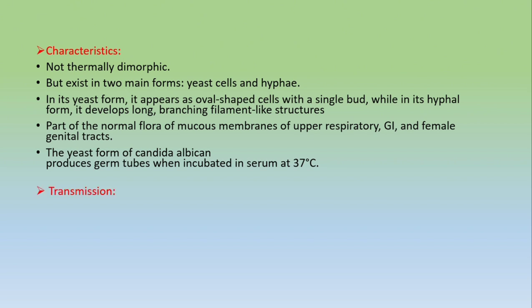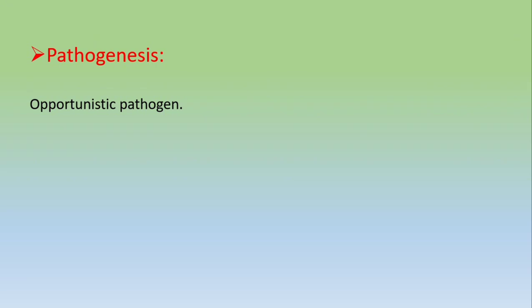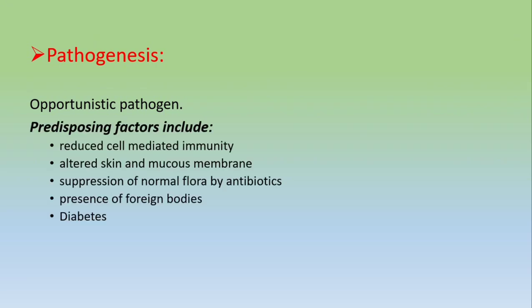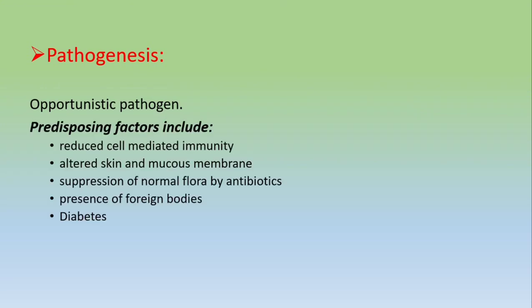Regarding transmission, Candida albicans does not transmit from human to human — there is no person-to-person transmission, because it is part of the normal flora of the skin, mucous membranes, GI tract, and vagina. Pathogenesis: although it is an opportunistic pathogen that does not cause disease in healthy individuals, it causes disease in individuals with reduced cell-mediated immunity, altered skin or mucous membranes, disruption of normal flora by antibiotics, presence of foreign bodies, or diabetes.